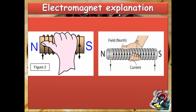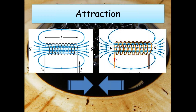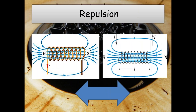Here is the explanation for the right-hand grip rule. You can make your hand in either position — in both cases your thumb will be showing the north pole. The electromagnet has the same properties as a permanent magnet. If we put unlike poles of two solenoids together, they will attract each other. If we put like poles together, they will repel each other. This happens in the same way as with permanent magnets.